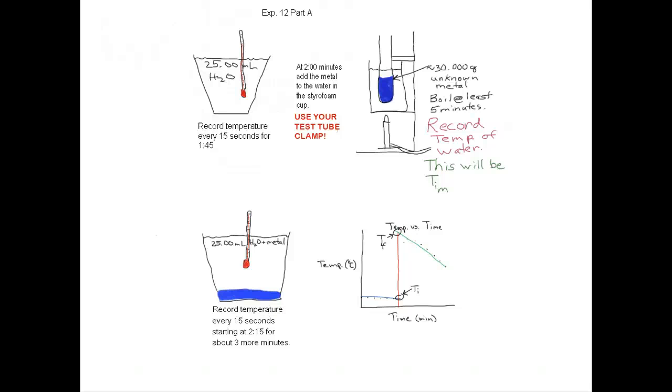This is a discussion of Experiment 12, Thermochemistry. This is Part A. So what you're going to do is you're going to get an unknown from Brian. It's going to be an unknown metal.